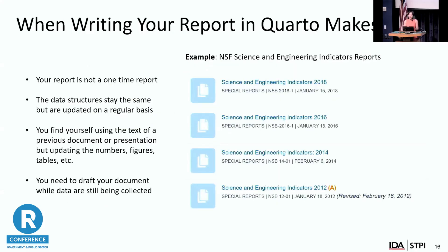So when does writing a report in Quarto make sense? The NSF Science and Engineering Indicators reports are a great example — it's a biannual report every two years, perfect for using Quarto to reproduce your documents. You're working with data that are pretty much the same, with the same data structures and types, just being updated. Your report is not a one-time report — this example is a report that's been done four times since 2012. If you find yourself using a lot of the same text from previous documents and copying and pasting a lot, there's a better way.